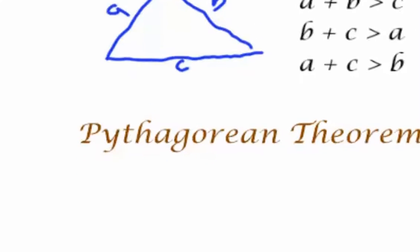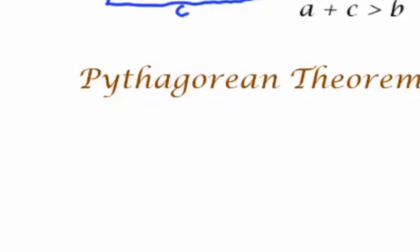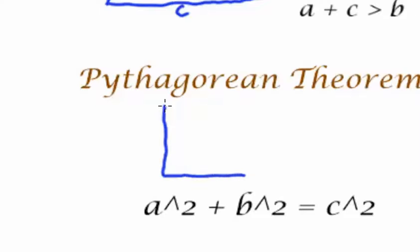The third theorem to discuss would be the Pythagorean theorem. This theorem specifically refers to right-angled triangles or triangles with a 90-degree angle in them. With this theorem, we discuss the three sides, A, B, and C, and the unique relationship that side A, when squared, added to side B, when squared, will equal side C when squared, when side C is always the hypotenuse, the longest side of a right-angled triangle. Thus, A squared plus B squared equals C squared.